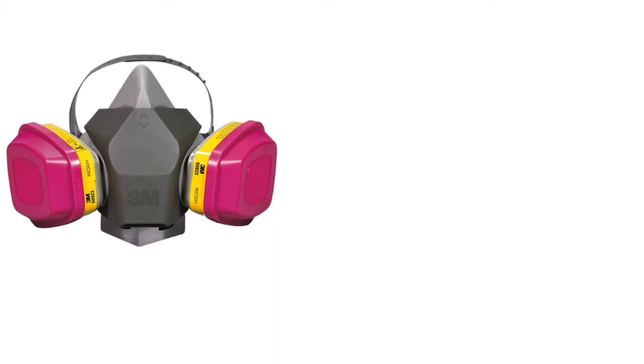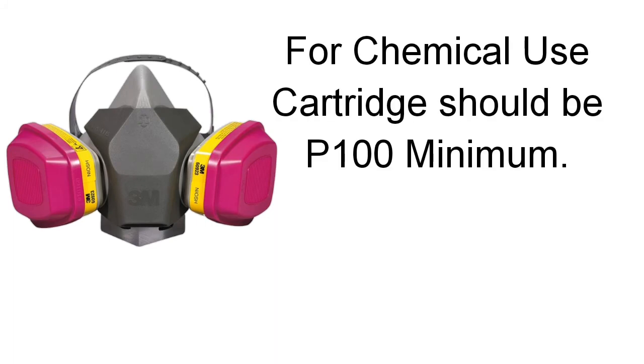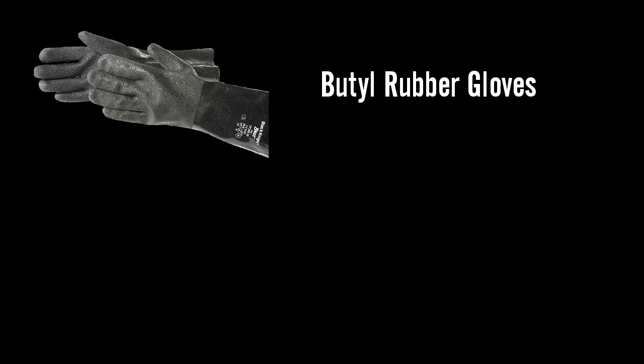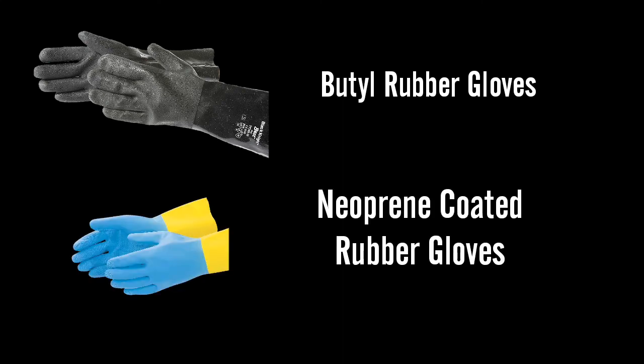For a chemical mask, the minimum cartridge should be P100. Make sure that you replace these cartridges regularly. These gloves are more industrial style — the butyl rubber gloves as well as the neoprene coated rubber gloves — but for a beginner they may be the best choice.